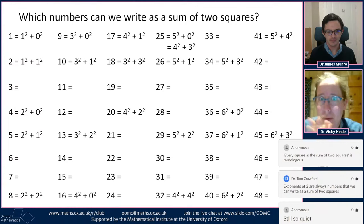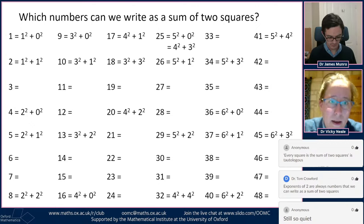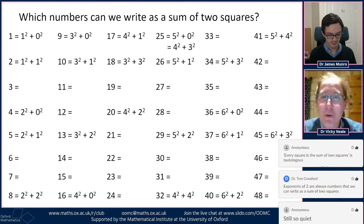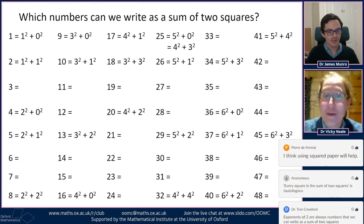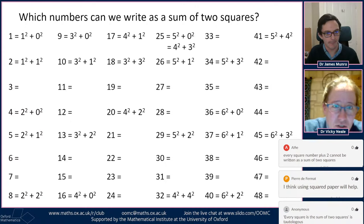Maybe numbers that can be written as a sum of two squares in two ways are the Pythagorean triple things — inspired by seeing that five squared is three squared plus four squared. There's a suggestion we could write three as a sum of two squares if only we allowed ourselves to use complex numbers. I sort of agree, but that's just a different game — the rules of today's game are the squares have to be squares of integers.